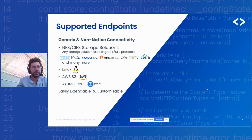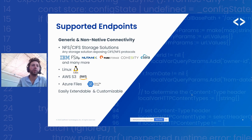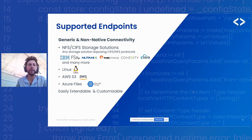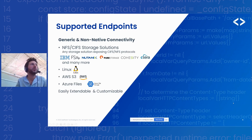The supported endpoints for these new REST APIs to ingest activities include all of our generic connectors — the NFS and CIFS storage connectors — covering everything from Nutanix to Pure Storage, Cohesity, and more. It will also be available for native connectors that don't currently have activity monitoring coverage, such as Linux, AWS S3, and Azure Files. Extending it to other types requires only a small back-end configuration with no code change, and you can reach out to our services team for any other unsupported endpoints.